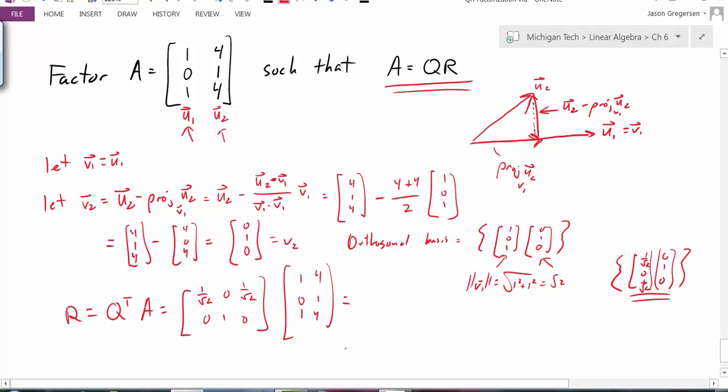And I'm going to look at this product. Looks like I will get in the first piece, I will get 1 over root 2 plus 1 over root 2. That's 2 over root 2. And then for the second component of that first column, I will get 0. I will get 0 plus 0 plus 0 plus 0.